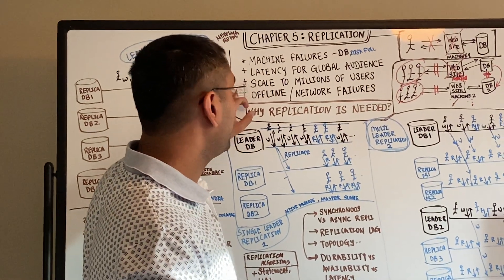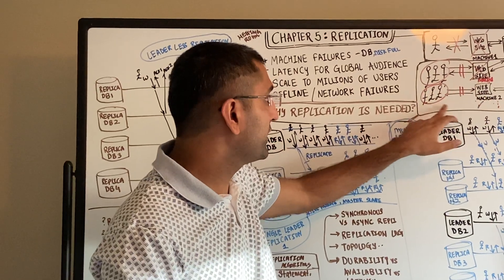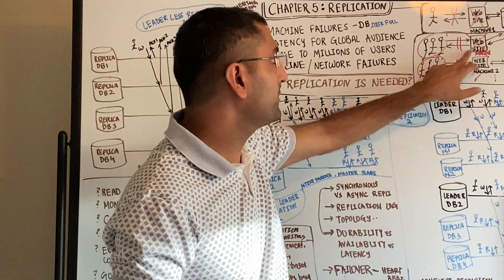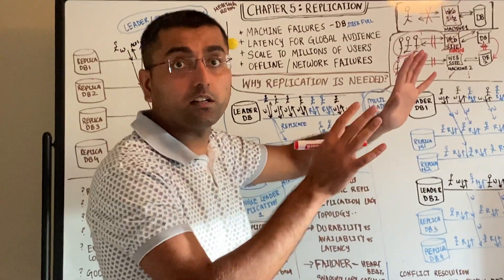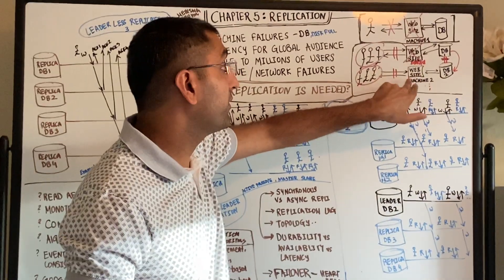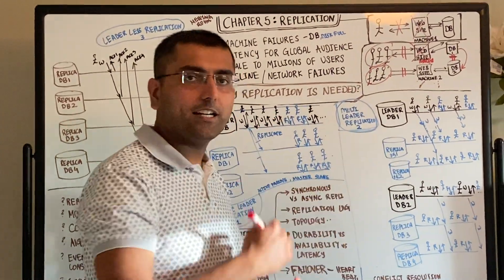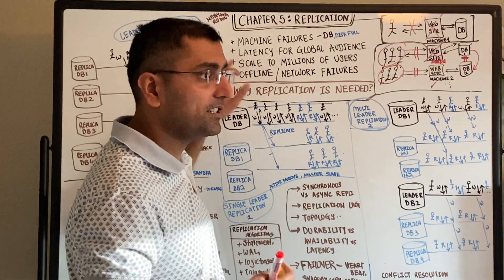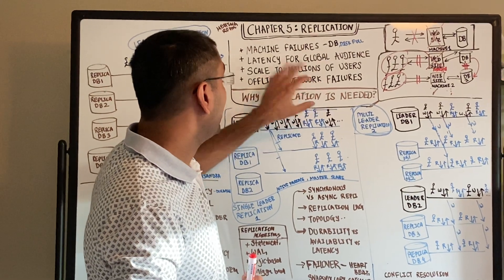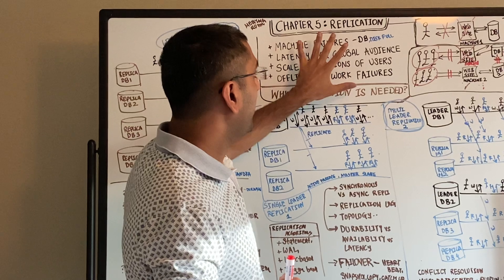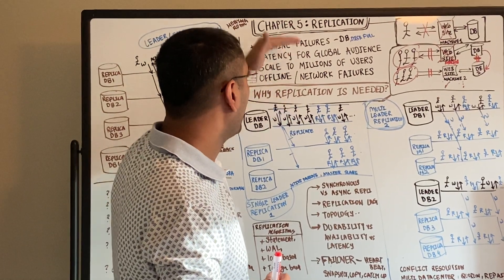Another factor is latency. If a user is in the United States and another is in India, you want machines closer to those users, meaning machines need to be geographically separate — in different data centers and locations. If you ask every user from around the world to go to a US data center, latency will be very high. So to serve latency, you want geographically distributed data centers closer to users. Offline, network failure, machine failure, and latency are all reasons that make replication required.